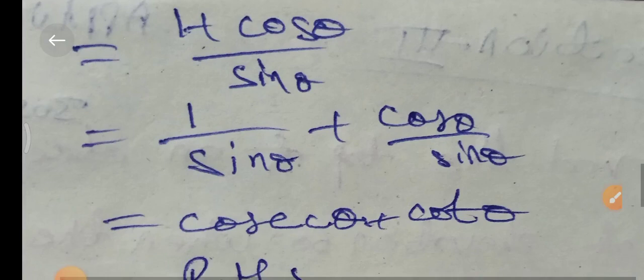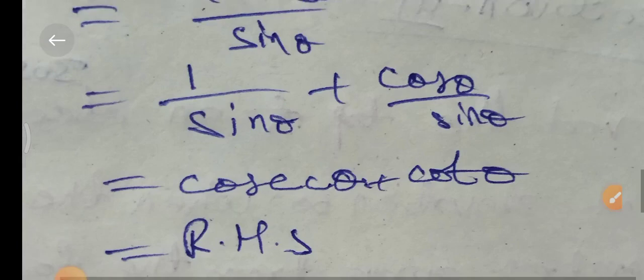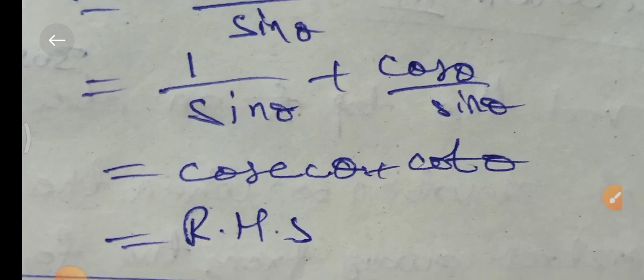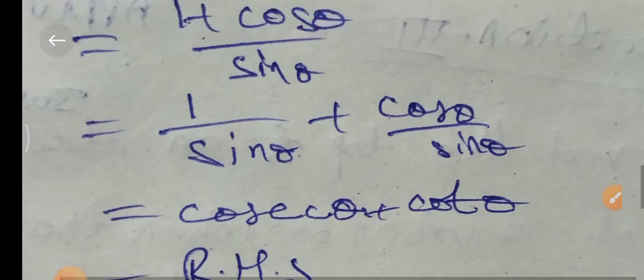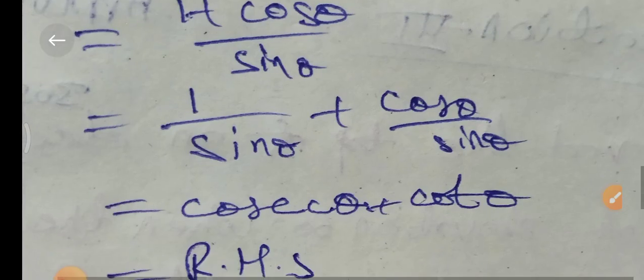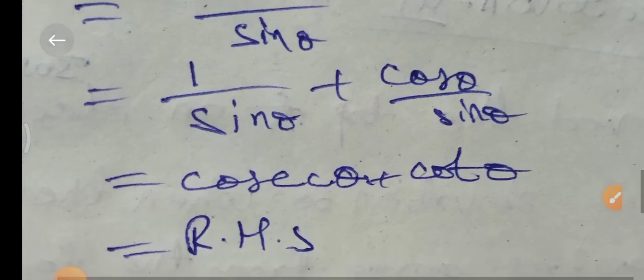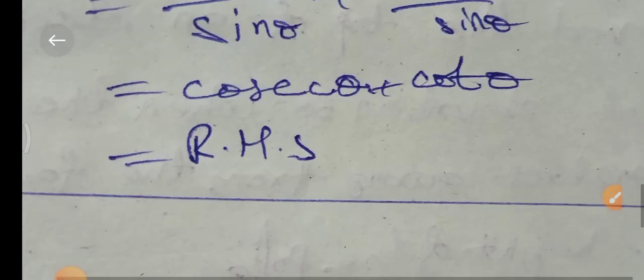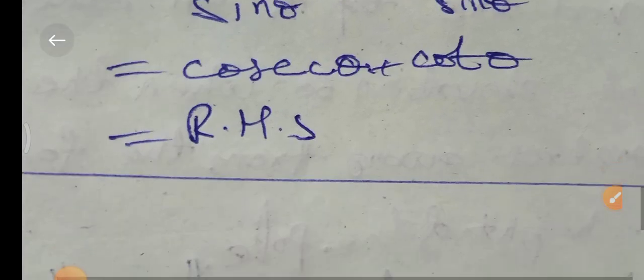Therefore (1 plus cos θ) over sin θ equals (cos θ plus 1) over sin θ, which equals the right hand side. Hence (1 plus cos θ) over sin θ is proved equal to the right hand side.